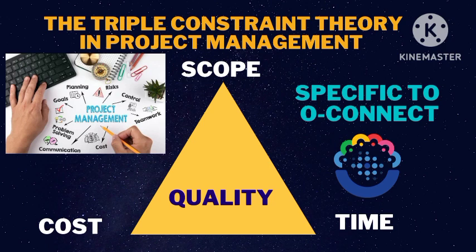The triple constraint theory in project management has three important elements: scope, cost, and time. And above all is the quality of the project. We will discuss these specifically in relation to O-Connect.